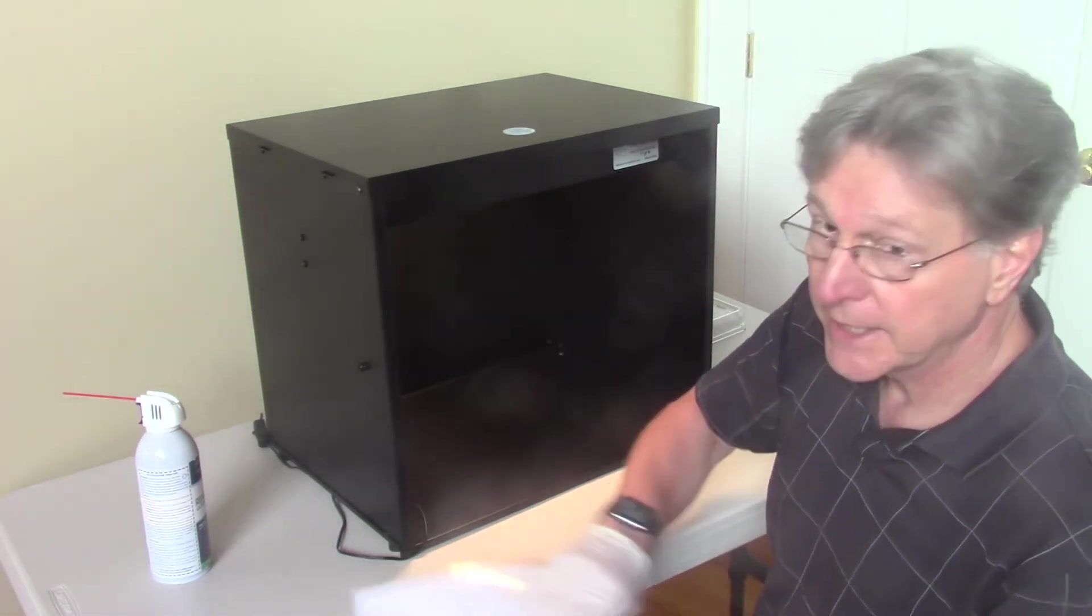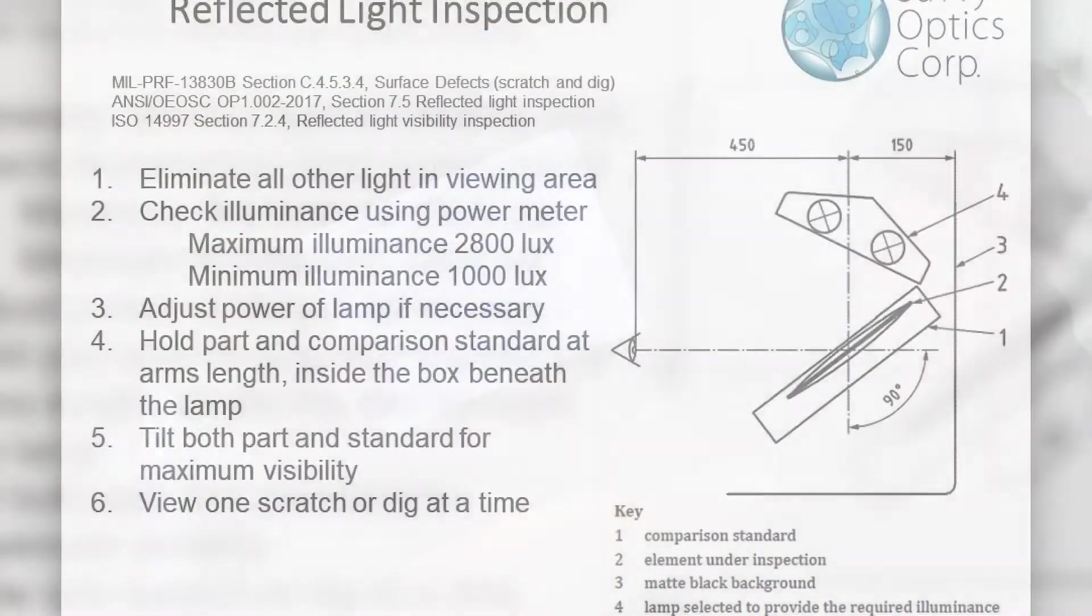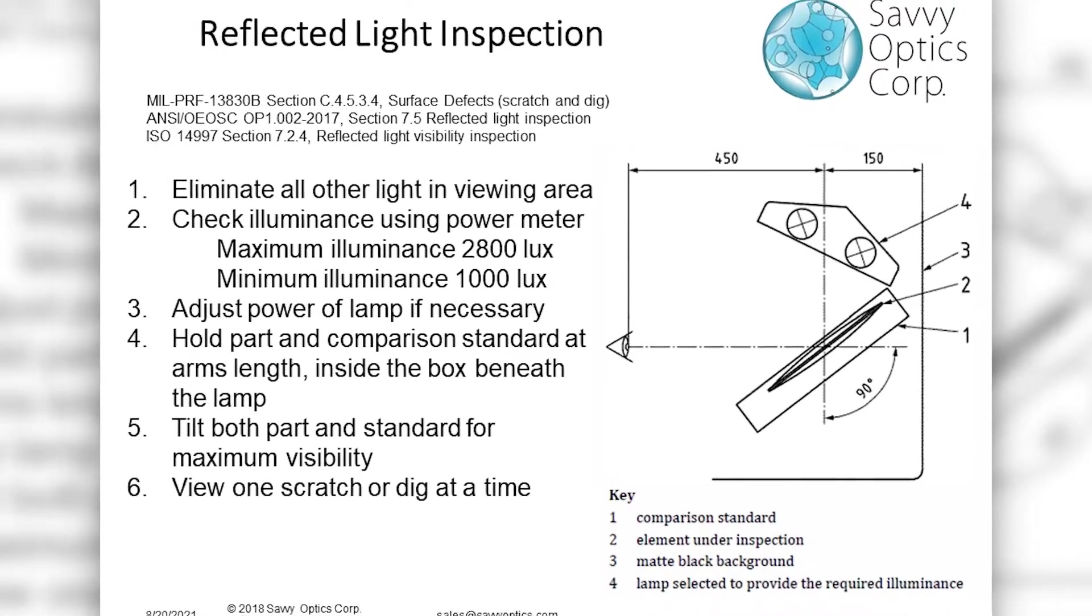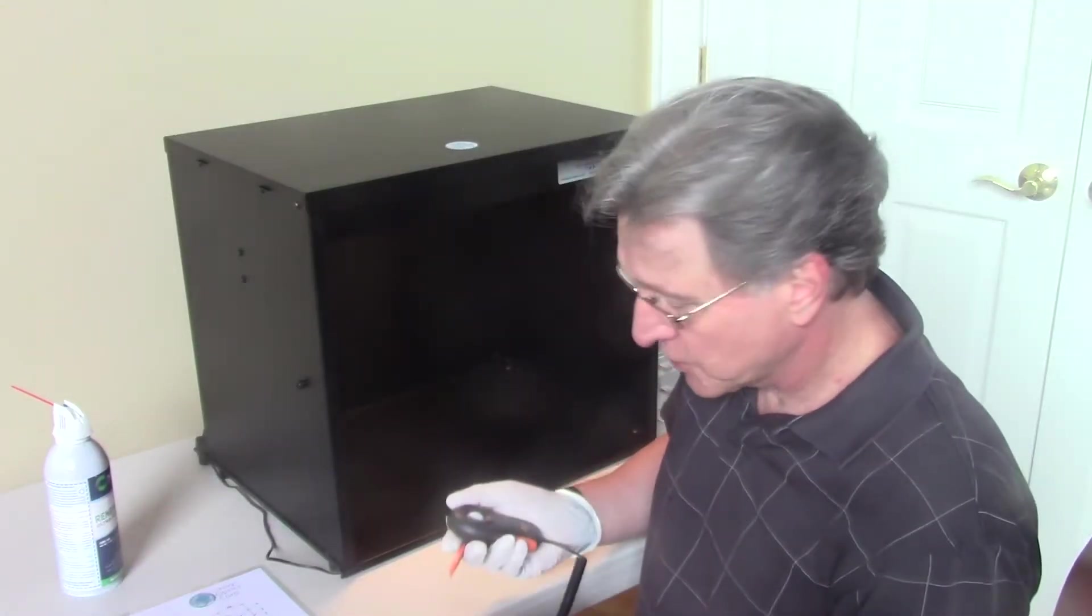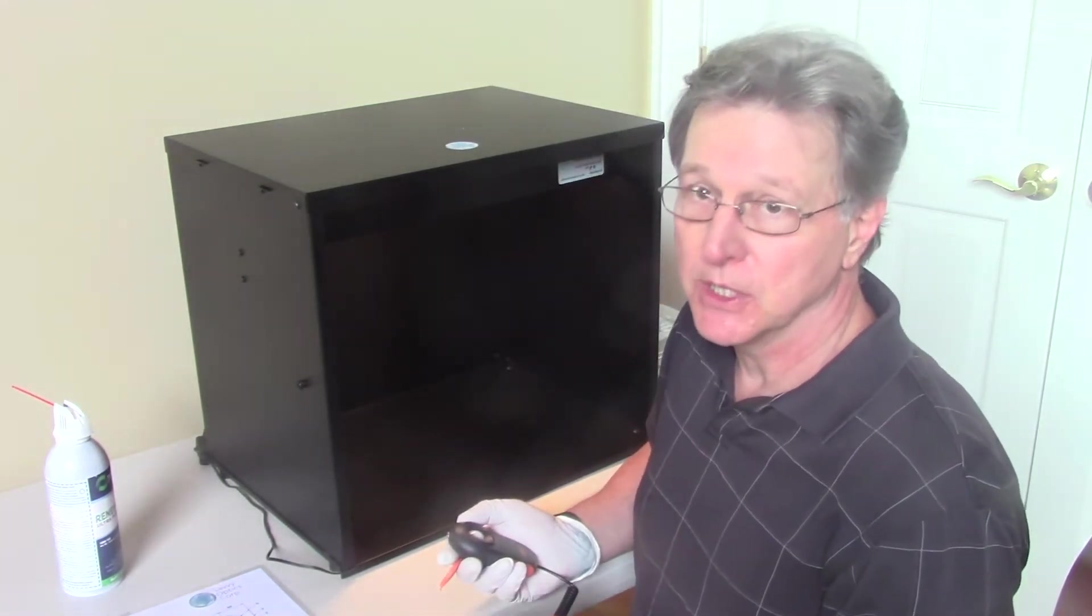In the case of the Reflected Light Method, which is also described on an information card that comes with the box, the first step in the inspection method is to actually measure the light level in LUX at the position where I'm going to be doing the inspection.